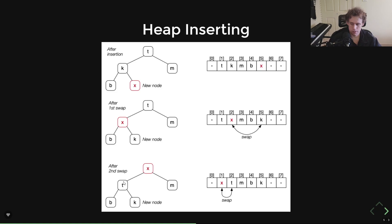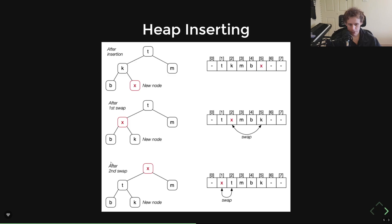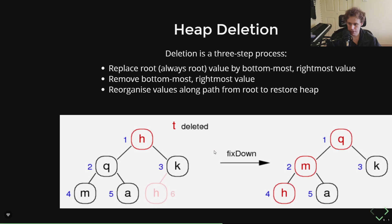Why bother with this structure? The short answer is that this is how we implement a priority queue. If you found a priority queue useful so far, this is how we implement it. There are probably other ways to do it, but this is a very efficient way, and that'll be clear by the end.